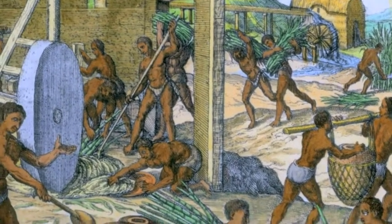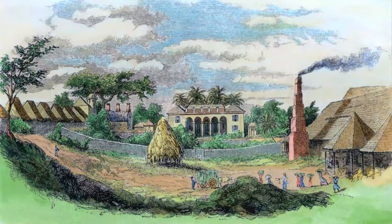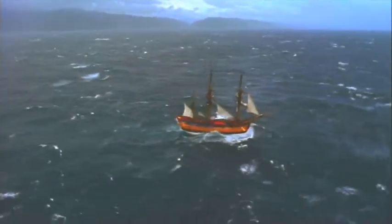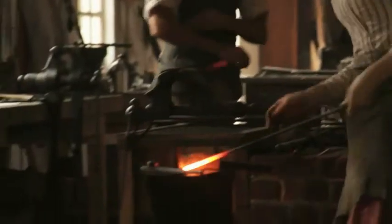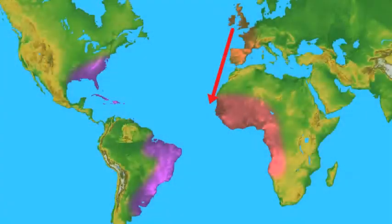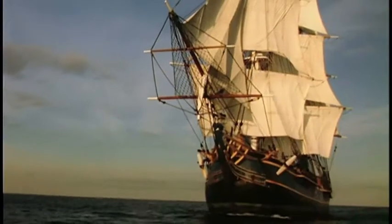The demand for slave labor increased dramatically as more and more Europeans established big plantations in the New World. It was during this time that the sailing ships involved in the slave trade began following a distinct triangular pattern of trading routes. In the beginning of this era, manufactured goods produced in Europe — items such as metal tools, pots, knives, and firearms — were shipped to West Africa. This journey constituted the first leg of this unique trading triangle.